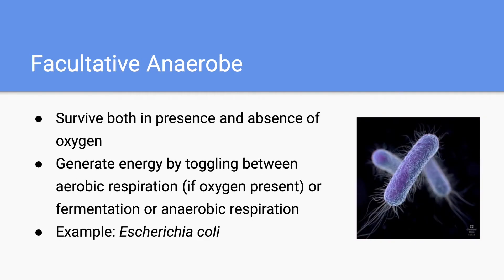Next we have facultative anaerobes, which can survive both in the presence and absence of oxygen. Facultative anaerobes are special because they're able to toggle between aerobic respiration if oxygen is present, or if oxygen isn't present, can generate energy by fermentation or anaerobic respiration. The ability to toggle between these forms of energy production is the key characteristic of facultative anaerobes. A really good example of these organisms is E. coli.